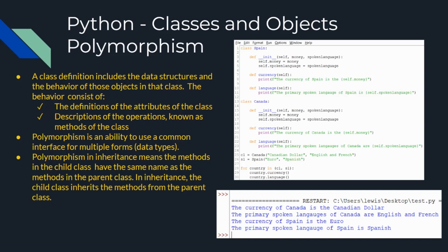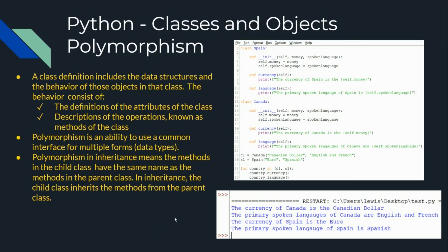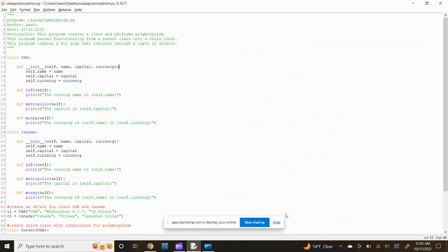Polymorphism is an ability to use a common interface for multiple forms, and the same class name can be used for different data types. As child classes can inherit parent class functionality, polymorphism in inheritance means the methods in the child class have the same name as the methods in the parent class. In inheritance, the child class inherits the methods from the parent class.